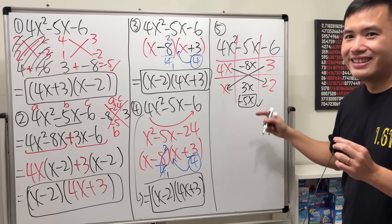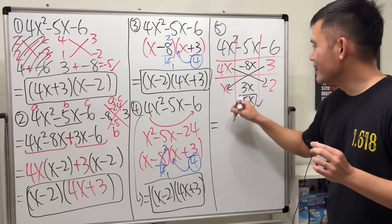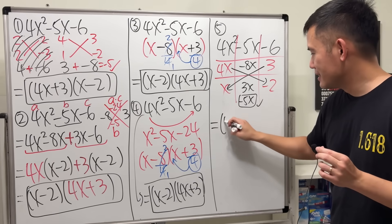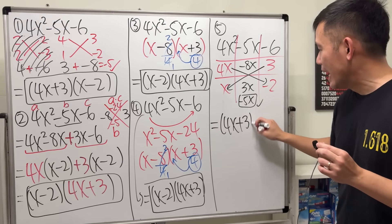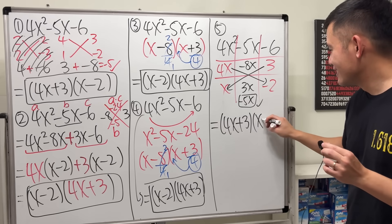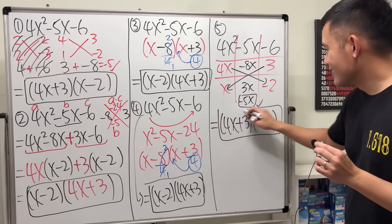Yes, we do. So, there we have it. 4x plus 3 times x minus 2. Done deal.